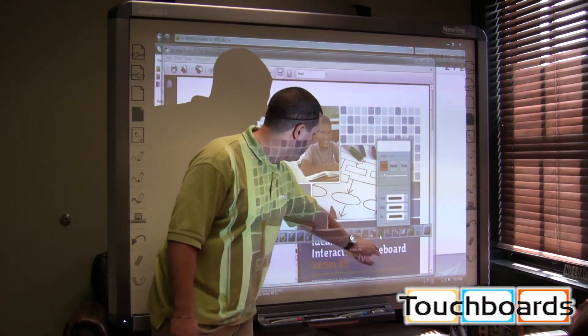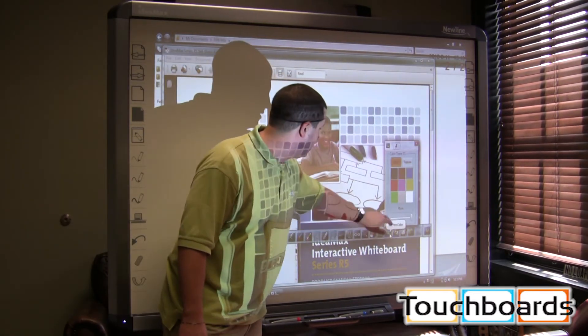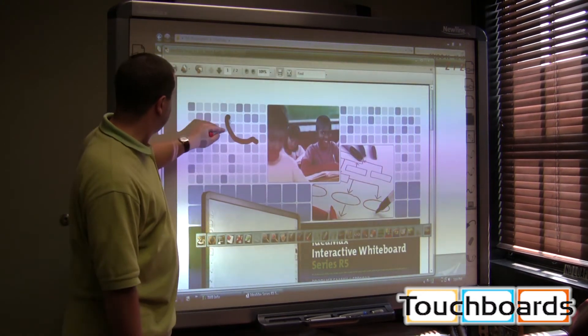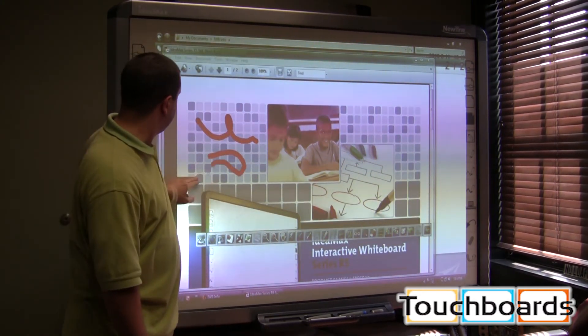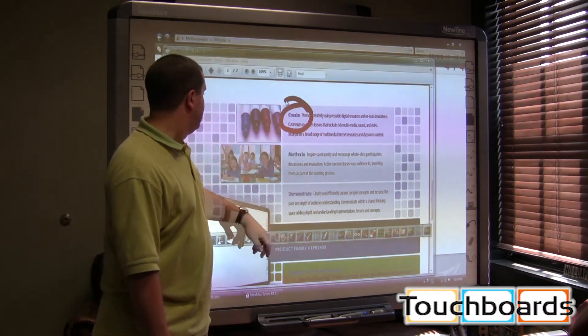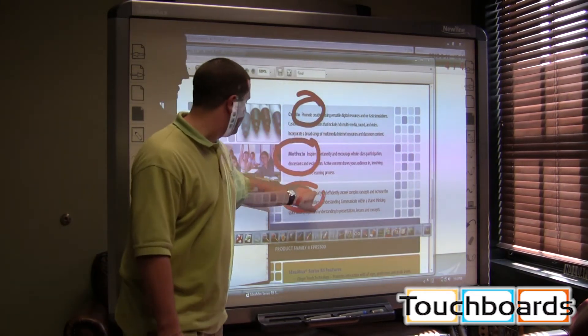We're going to change line thickness, make it a different color. Let's pick up the red pen. We're going to change it right back to red. So I can write in red. I can write in red with my finger. Create. We can promote creativity. Motivate. We can demonstrate using this board.